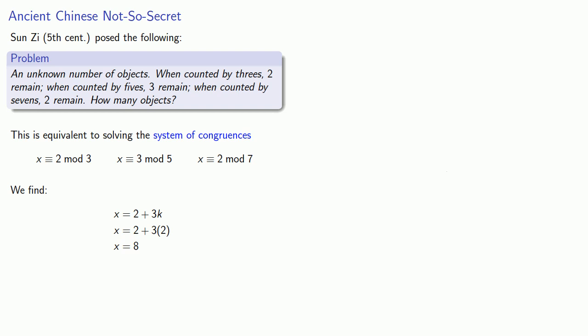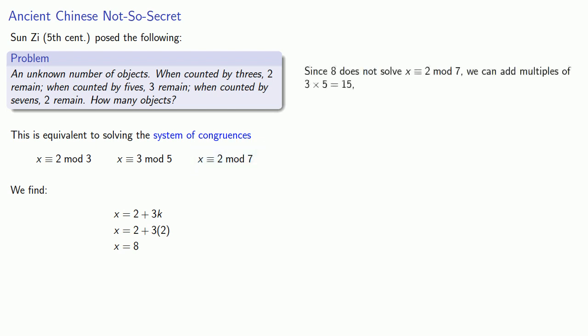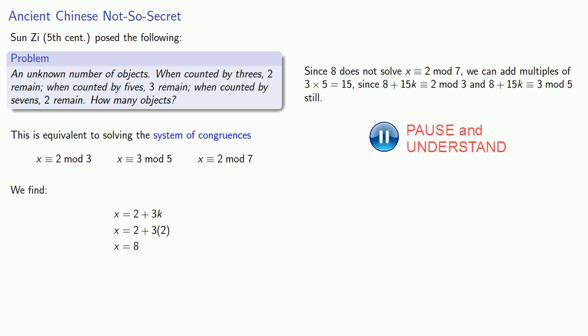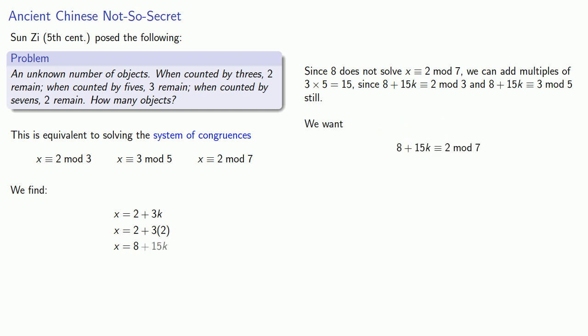Now if we're fantastically lucky, x equal to eight will solve this third congruence. But we're not. Since eight does not solve x congruent to two mod seven, we can add multiples of three times five — fifteen — and that will preserve our solutions. Eight plus fifteen k is still congruent to two mod three, and eight plus fifteen k is still congruent to three mod five. But our hope is that eight plus fifteen k will be congruent to two mod seven, and now we can try to solve this.